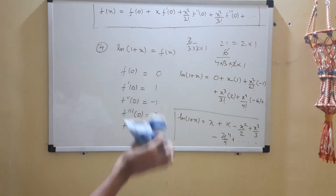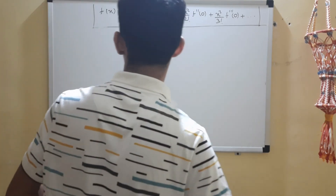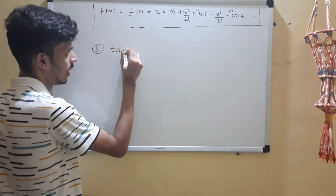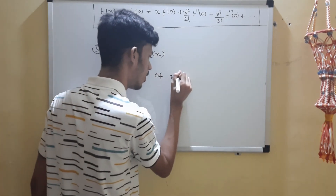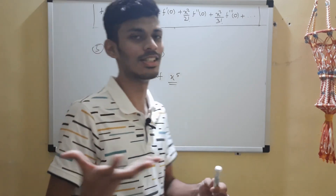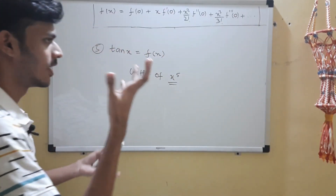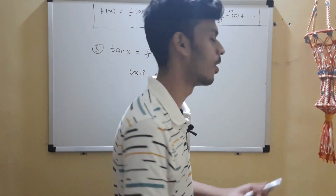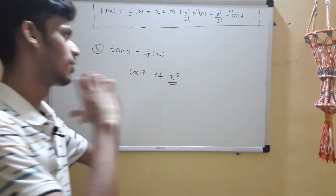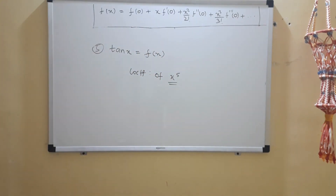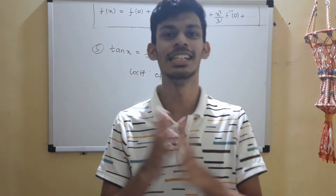There is one more: tan x, which I'll give as homework. Take f(x) equals tan x and find the series using the Maclaurin formula. Comment down the coefficient of x to the power 5 in the tan x series. You'll find that the series of tan x is completely random with no simple pattern — Taylor series don't always have patterns. A correct answer gets a heart from me. That's all for today's lecture; I'll see you in the next episode of Work Cuts!